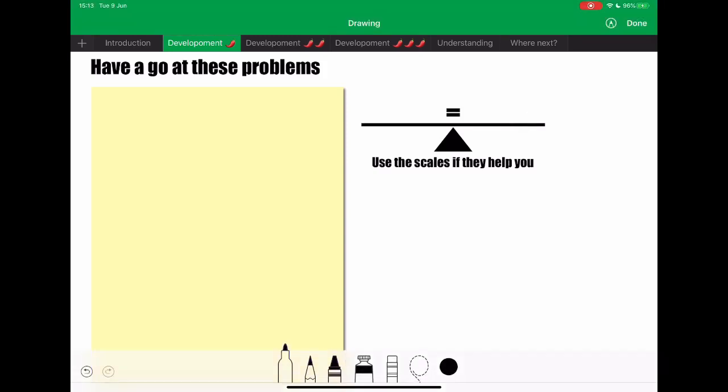Again, if I said that the question here was 2a equals 5, they could set that up on their scales, and they could start to work it out. So they could start to think about, okay, so if that's balanced, what does that mean?